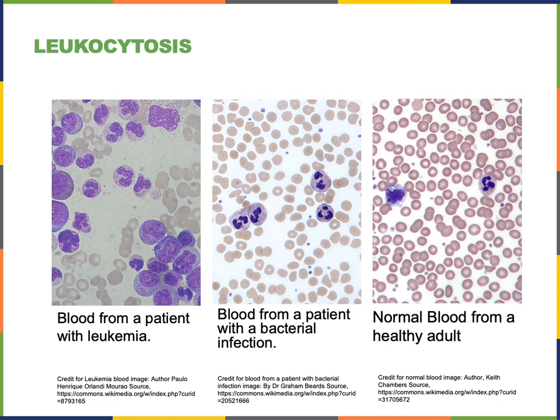Leukocytosis is an elevated number of white blood cells, or leukocytes, in the blood. Leukocytosis is a fairly common sign of infection. The image here shows leukocytosis associated with a bacterial infection, where a high number of neutrophils are seen in the blood. An elevated number of neutrophils is a common result of bacterial infection.